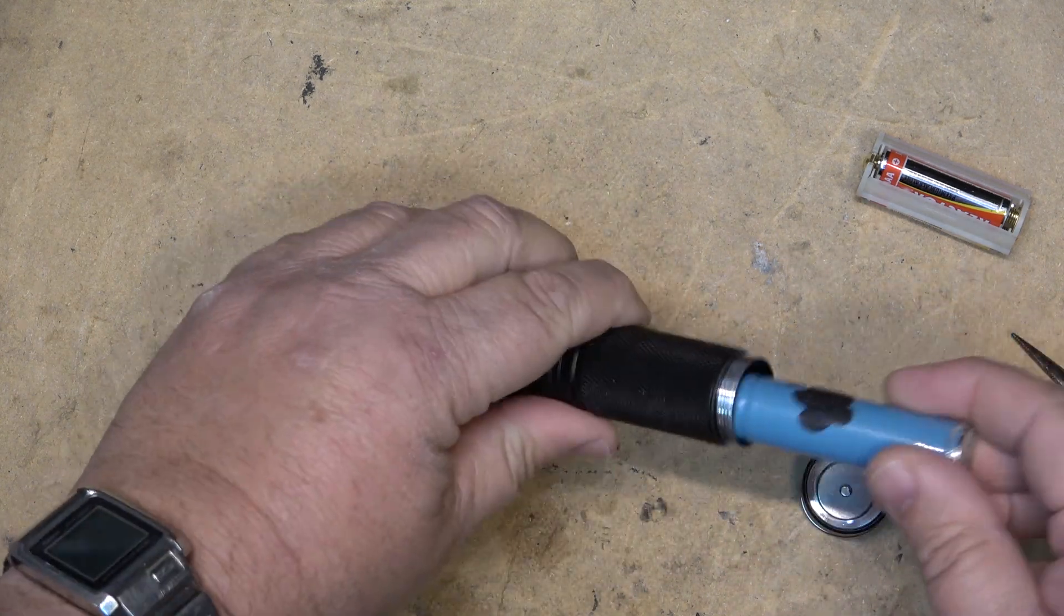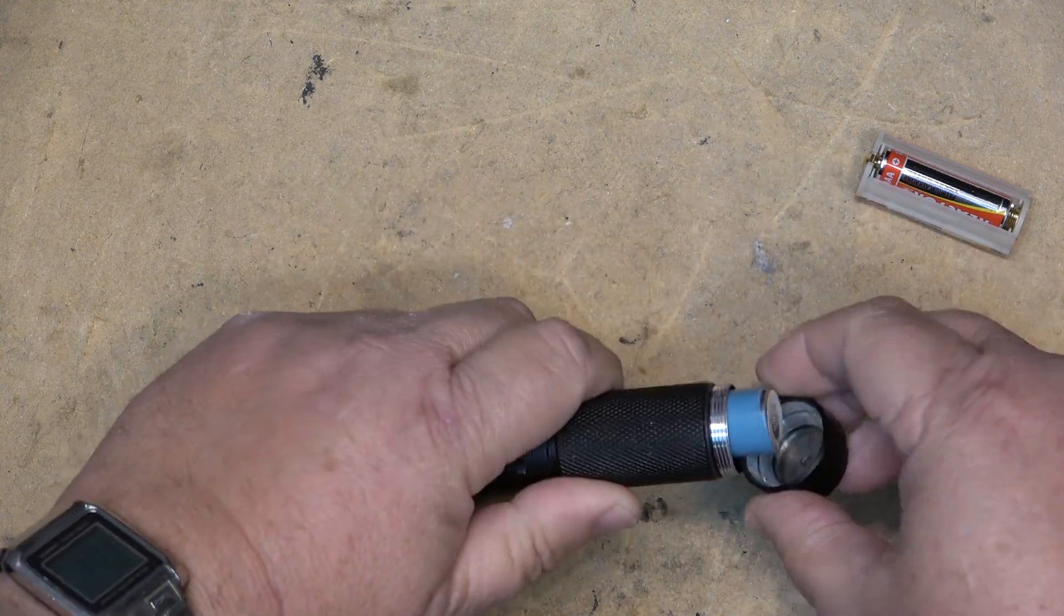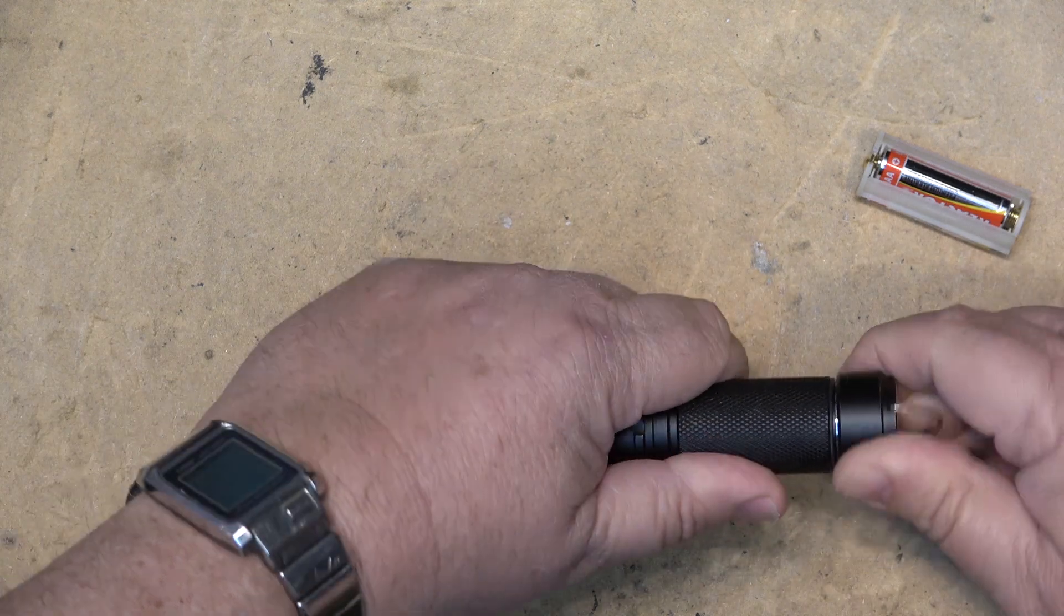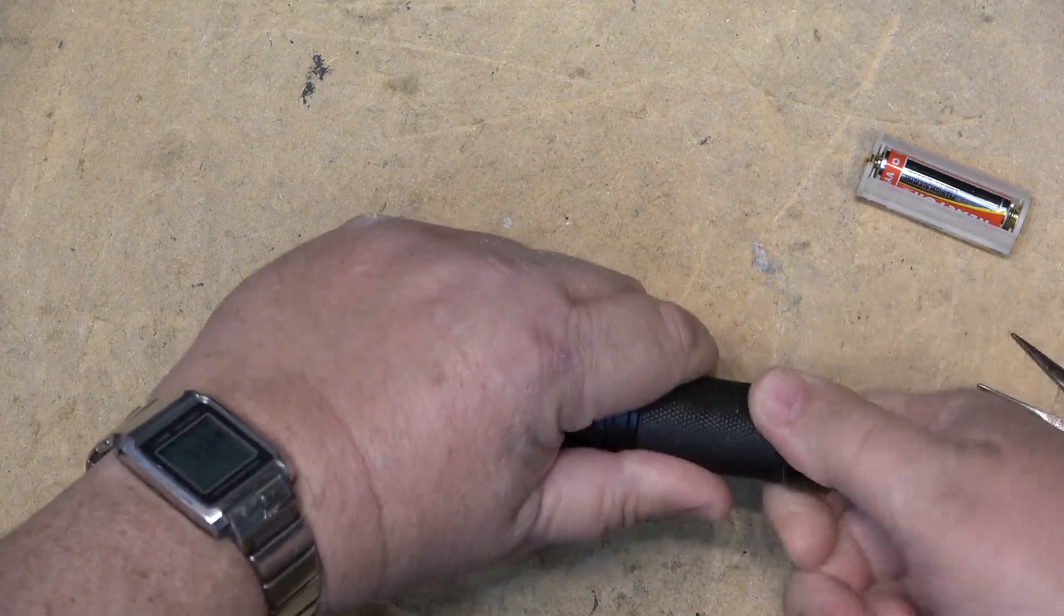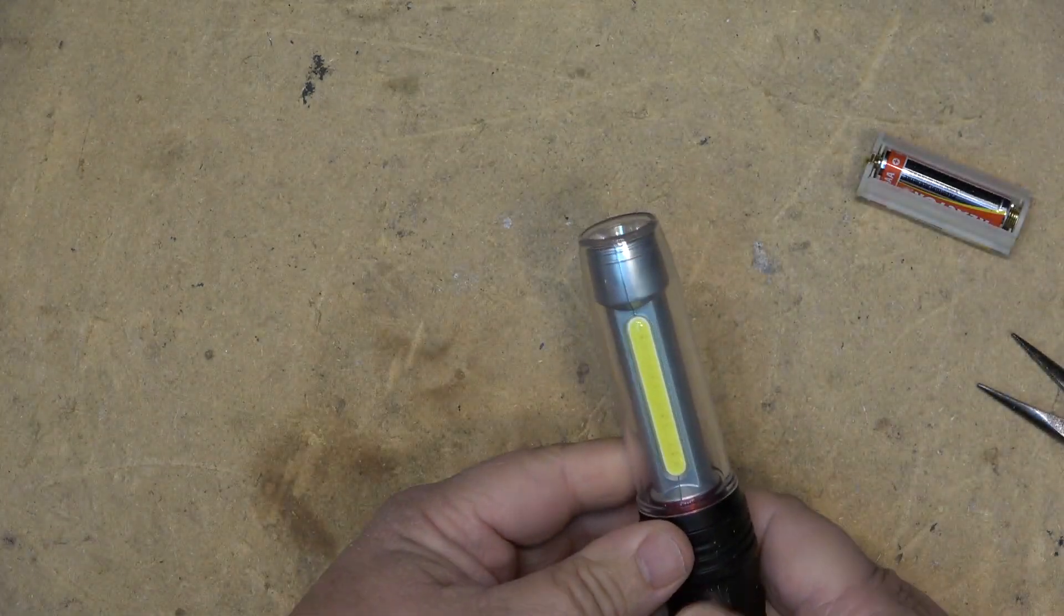The 18650 positive in, cap will go on and it will screw on just like that. Now it's nice and bright.